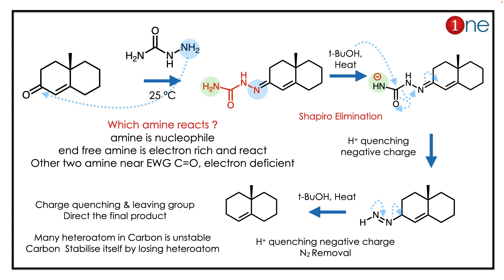The reaction involves basics as well as Shapiro elimination. In the first step, the amine attacks the carbonyl. The interesting question is which amine attacks — the NH2 end attacks because it is away from the electron-withdrawing C=O group. So it attacks, forming a new C-N bond, which is a hydrazone-type formation. Then you add the base.